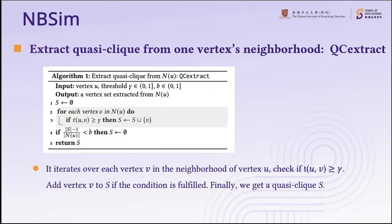We can then extract a quasi-clique from one vertex neighborhood using a procedure called QC-Extract, which is simple. We first initialize a vertex set, then iterate over each vertex v in the neighborhood of vertex u, checking if the containment score t(u,v) is larger than gamma, and adding v to S if the condition is fulfilled. Finally, we obtain a quasi-clique S. The parameters gamma and b here are set by users to ensure the lower bound of the quasi-clique.